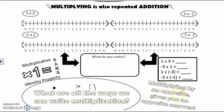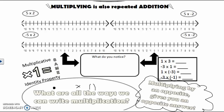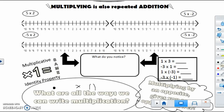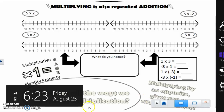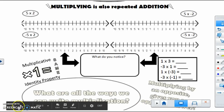Multiplying by an opposite gives you the opposite answer. When we multiply a positive by a negative, we end up with a negative. When we multiply a negative times a negative, we end up with a positive, because it gives us the opposite. Keep these doodle notes somewhere safe in case you need to look back.